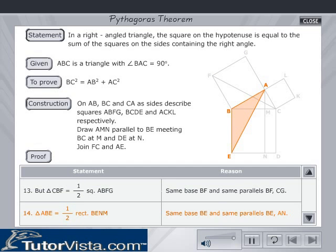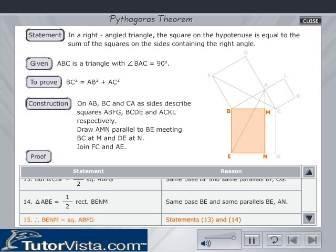Triangle ABE = half of rectangle BENM, since they have the same base BE and are between the same parallels BE and AN. Therefore, rectangle BENM = square ABFG, since triangle CBF = triangle ABE.